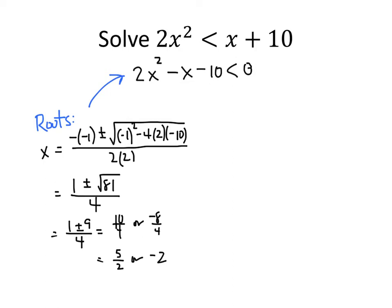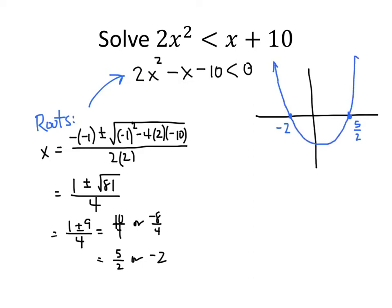Those are the roots of this quadratic expression, so we can sketch a rough graph of what this parabola looks like. The roots are at 5 over 2 and negative 2. We also know that the coefficient of x squared is positive, so this parabola opens upward. If what we want to know is when this curve is negative, we can see it's negative in between negative 2 and positive 5 halves. So the solution is negative 2 less than x less than 5 halves. This is just another way to approach the same kind of problem — once we know the roots, we can determine when the expression is positive or negative by drawing a graph.